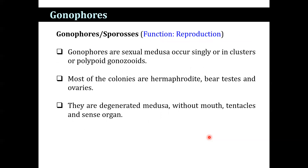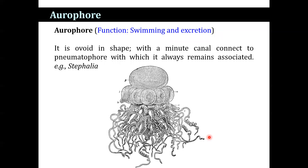The gonophores or sporosacs are concerned with reproduction. They are the sexual medusae that occur singly or in clusters on polypoid gonozooids. Most colonies are hermaphroditic, bearing testes or ovaries. They are degenerated medusae without mouth, tentacles, and sense organs. Another structure is the orophore, whose function is debated — some mention swimming, some mention excretion. It is an oval, septic structure with a minute canal connected to the pneumatophore, with which it always remains associated, and is found in Stephalia.